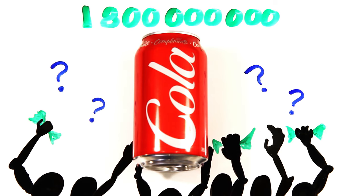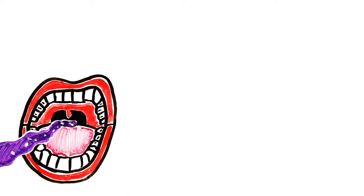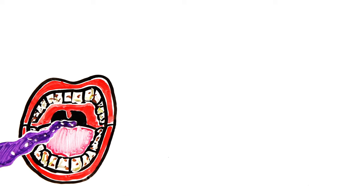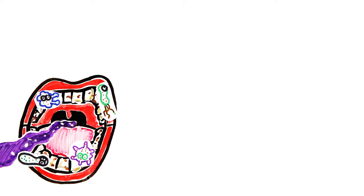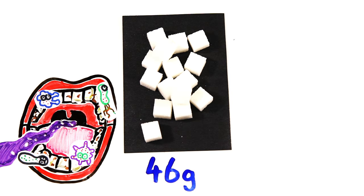But what would happen to our brains and bodies if we only drank soda? As the drink enters your mouth, its high acid content begins to erode the enamel on your teeth and the microorganisms in your plaque start to feed off the sugar, which can lead to cavities. Finish the can and you may have consumed upwards of 46 grams of sugar.